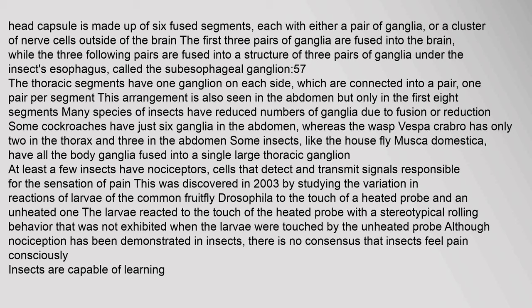Some insects, like the house fly Musca domestica, have all the body ganglia fused into a single large thoracic ganglion. At least a few insects have nociceptors — cells that detect and transmit signals responsible for the sensation of pain. This was discovered in 2003 by studying the variation in reactions of larva of the common fruitfly Drosophila to the touch of a heated probe and an unheated one. Although nociception has been demonstrated in insects, there is no consensus that insects feel pain consciously. Insects are capable of learning.